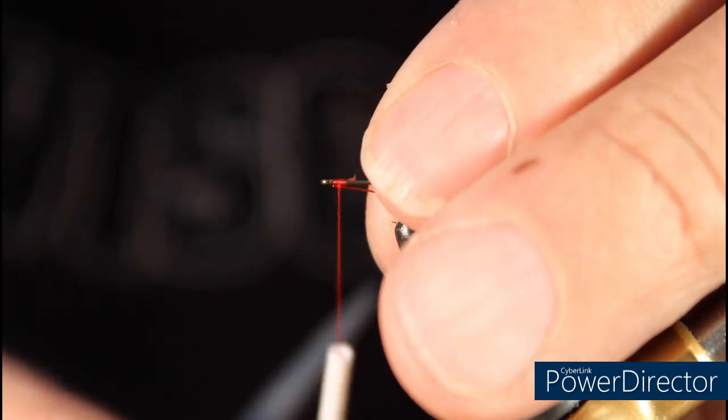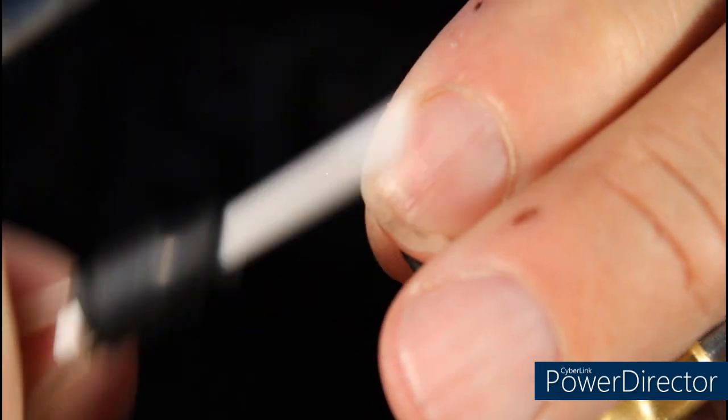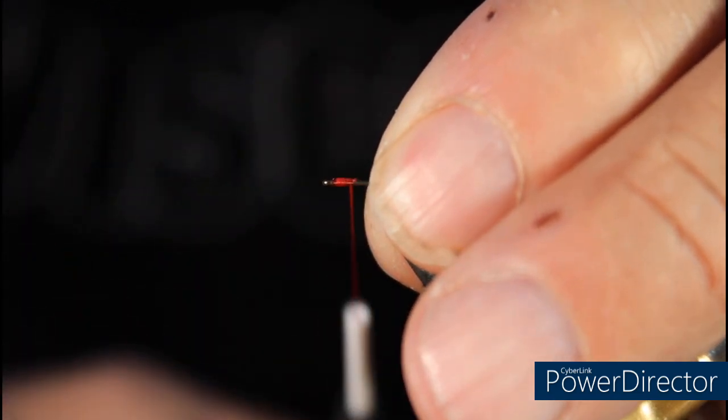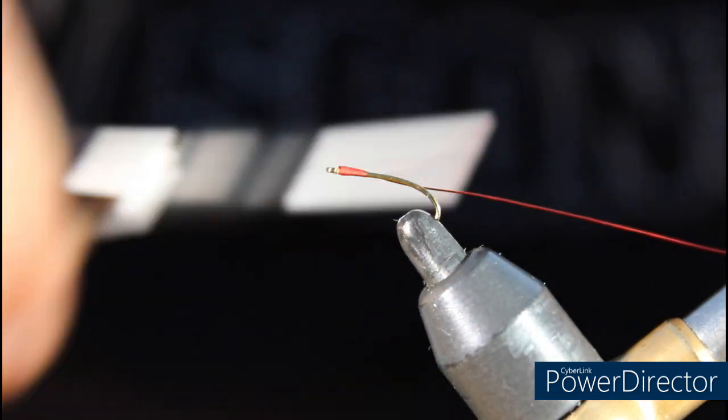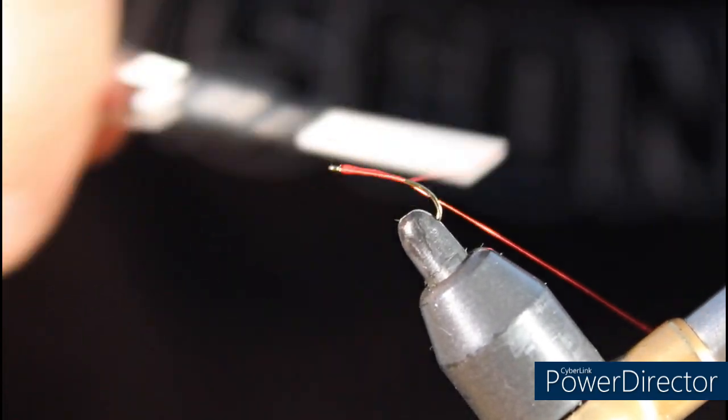We're going to tie that in at the eye of the hook. We're just going to work it backwards over the fly, threading backwards all the way onto the bend of the hook.